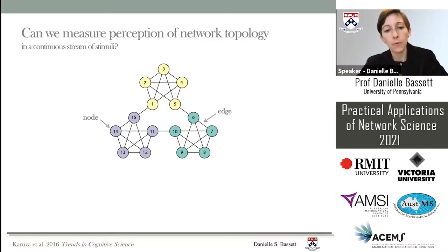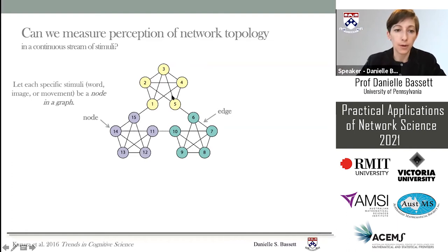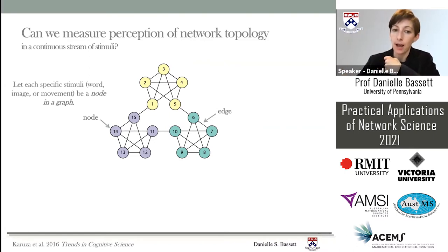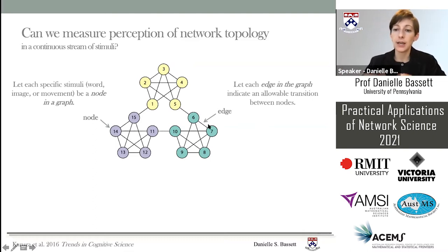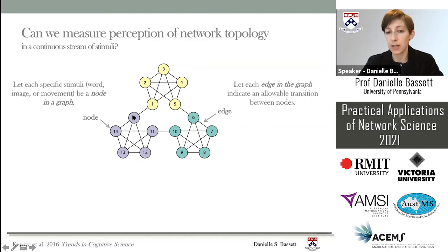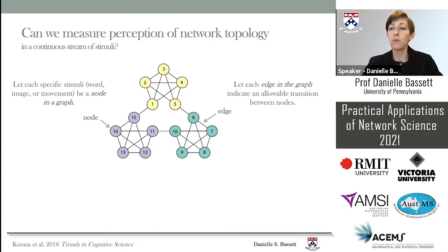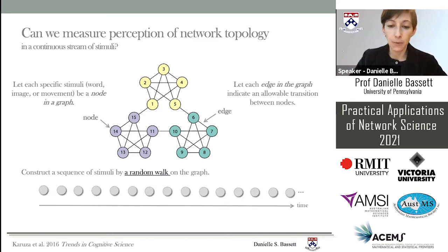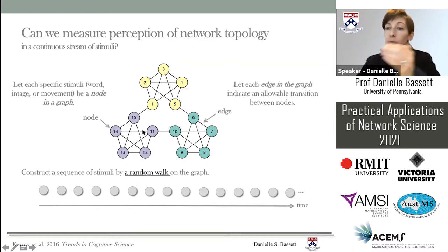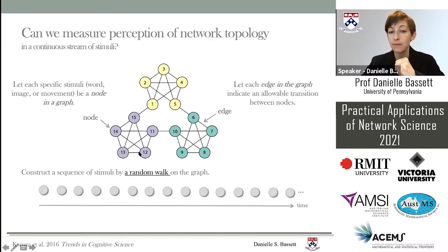We decided to build a little graph where every stimulus — a word, image, or movement — is a node, and every edge indicates an allowable transition between nodes. I can move from node 14 to node 15, but not directly from node 14 to node 2 because there's no direct link. We take a random walk on this graph to create a sequence of stimuli: at every node we have an equal probability of crossing any of the four edges that come out of it.